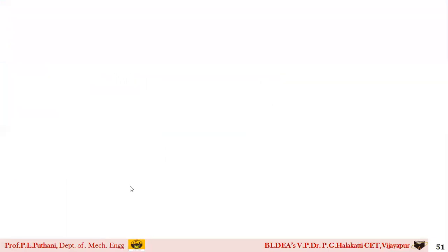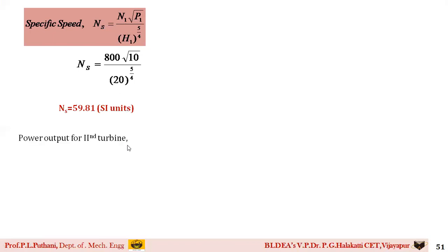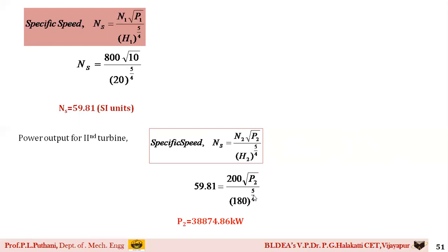Once we have D2 = 6 m, we use the specific speed equation: Ns = N1√P1 / H1^(5/4). This gives Ns = 59.81 in SI units. In metric units (EMKS) we multiply by the conversion factor 0.857. Then for the output power of the second turbine, using the same specific speed equation with second turbine conditions: Ns = N2√P2 / H2^(5/4), we get P2 = 38,874.86 kW.